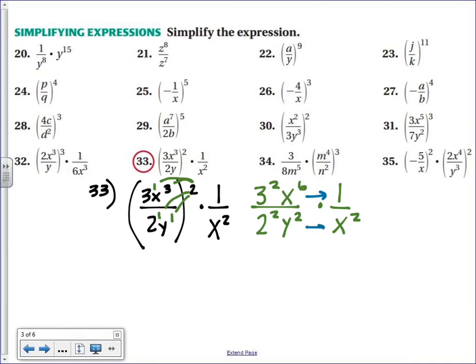So we just simply multiply straight across. And again, there's no like terms or no terms with the same base, so you literally just mush them together.